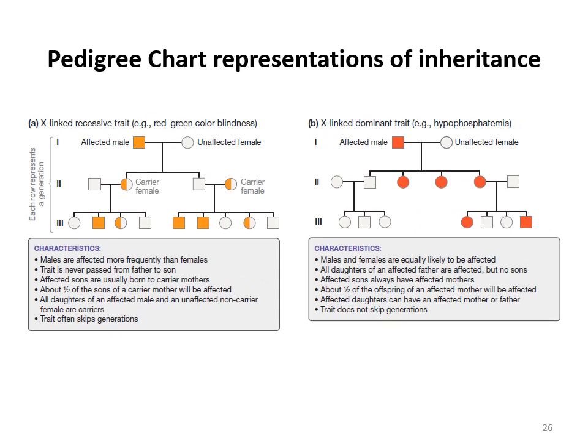This last picture of pedigree charts shows X-linked inheritance. You could compare the previous autosomal ones — mutations on any chromosomes other than X or Y — versus these pictures showing inheritance on the X chromosome where the mutation is found on the X chromosome. You'll notice certain patterns in terms of whether the male parent has the disease and how swapping them can change the results. If you have any questions or concerns, as always contact me in the Remind app.